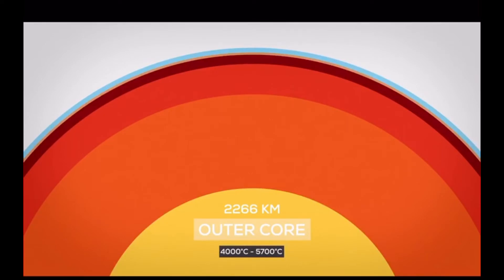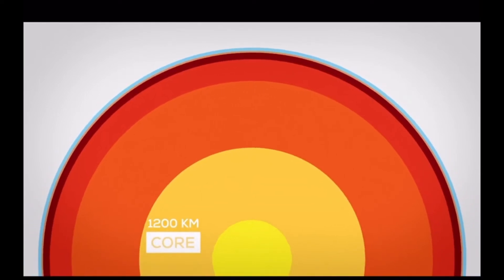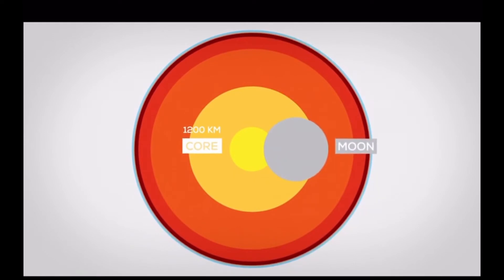Earth's outer core is a liquid layer of iron and nickel, about 2,266 kilometers thick. Temperature varies from 4,000 degrees Celsius to 5,700 degrees Celsius. At the center is the inner core, which is mostly solid — a ball made up of an iron and nickel alloy. It has a radius of 1,200 kilometers, is 70% the size of the Moon, and the temperature here is equal to the surface of the Sun.